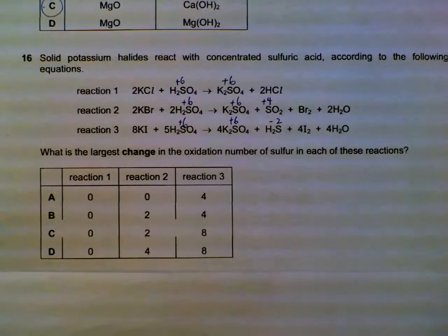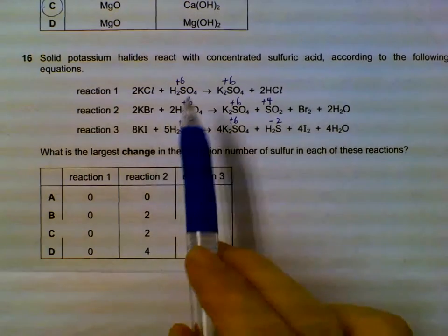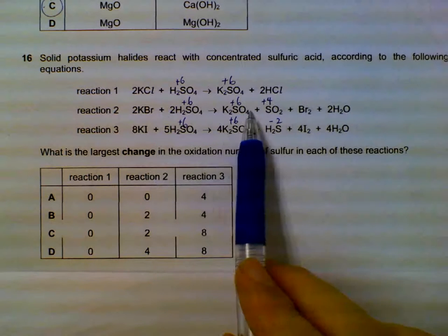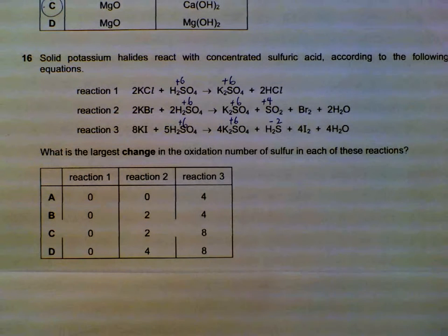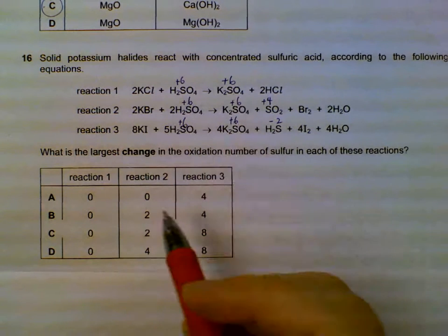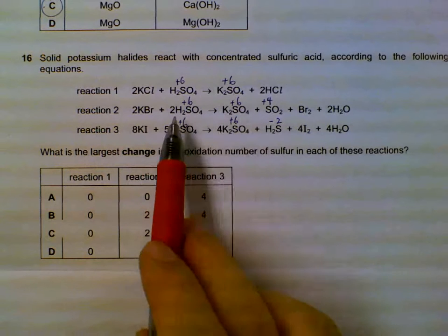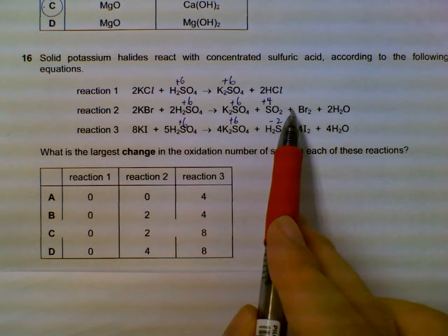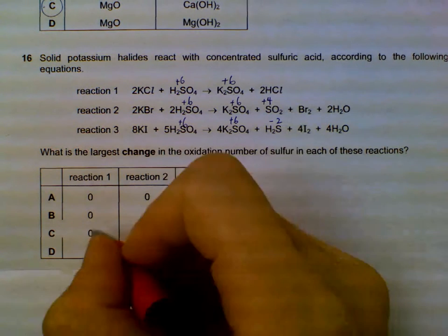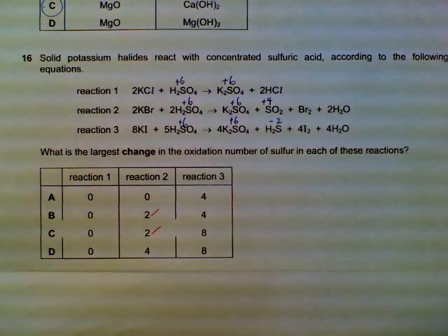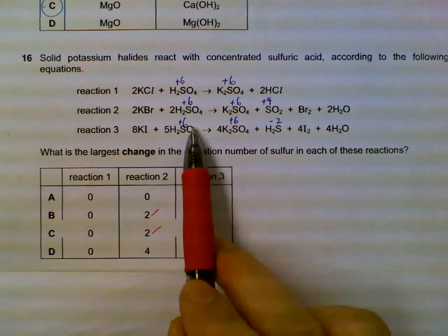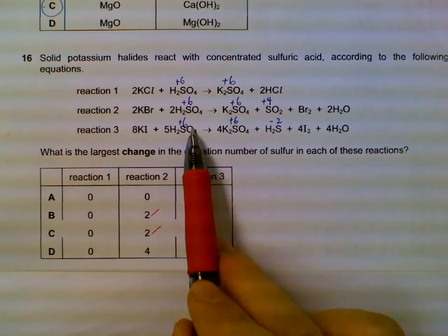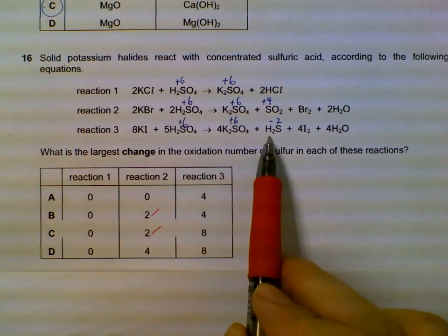Question 16: largest change in oxidation number of sulfur. The sulfur oxidation numbers are listed here; we want the largest change in each reaction. There is no change in reaction 1, so it's 0. In reaction 2, the largest change is from +6 to +4, so there is a decrease of 2.